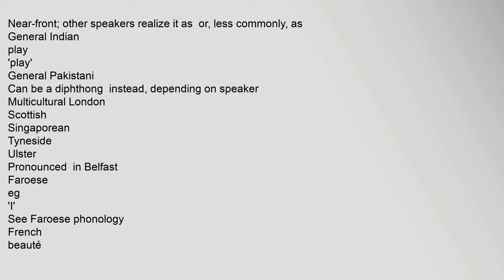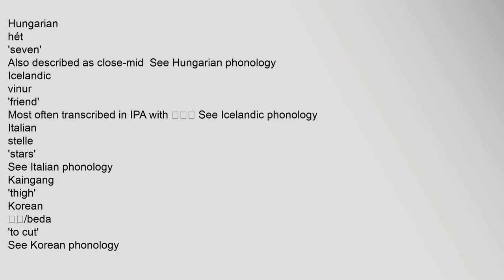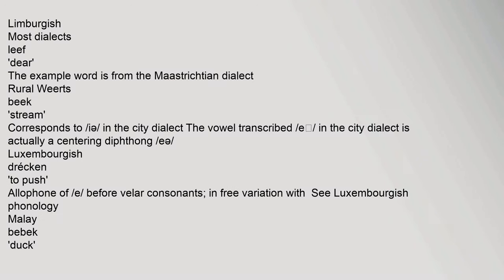French: see French phonology. Galician. German standard. Hungarian: also described as close mid — see Hungarian phonology. Icelandic: most often transcribed in IPA — see Icelandic phonology. Italian: see Italian phonology. Korean: see Korean phonology. Limburgish most dialects: the example word is from the Maastrichtian dialect; rural corresponds to in the city dialect. The vowel transcribed 'e' in the city dialect is actually a centering diphthong.